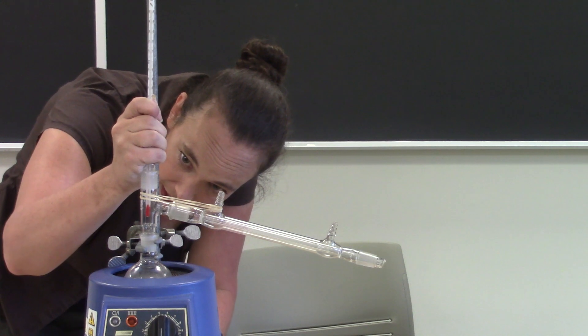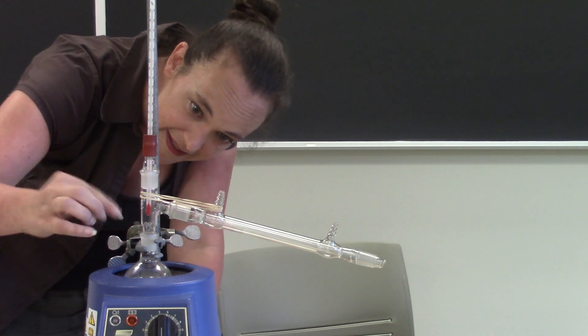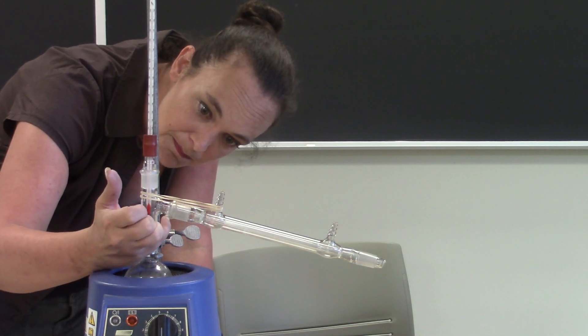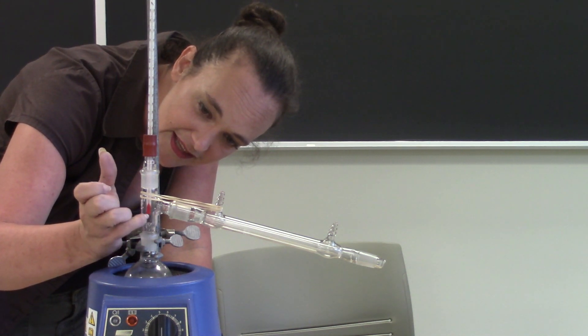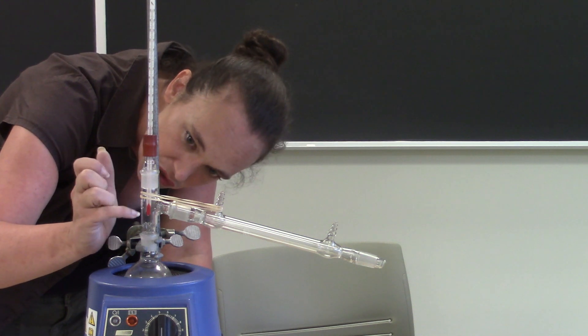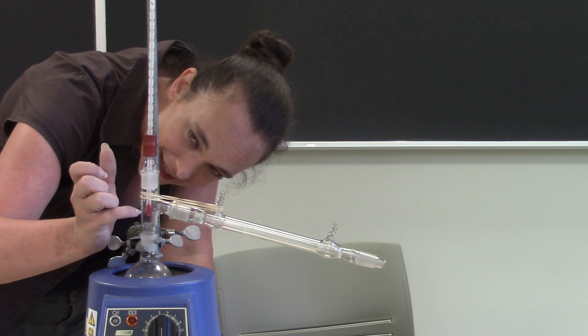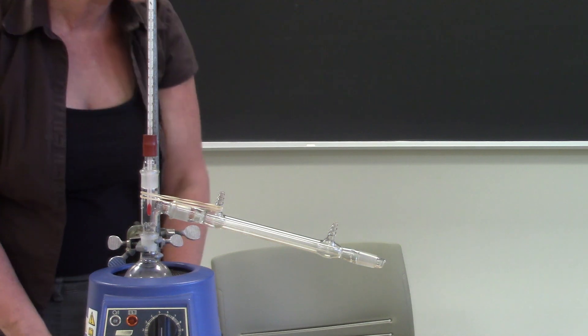Just like that and then we're going to slip that back on and you want to make sure that the thermometer bulb is kind of bisecting, if you look at the bottom of the joint that goes out to the condenser, kind of form an imaginary line connecting that all the way to the other side, you want your thermometer bulb to be kind of bisecting that line. That'll give you the most accurate temperature reading.